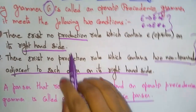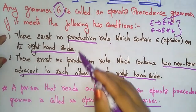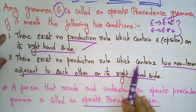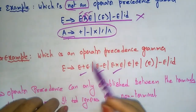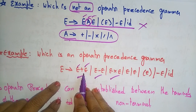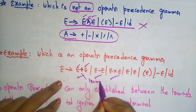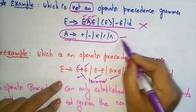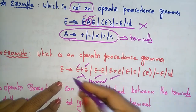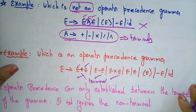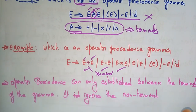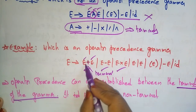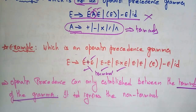So, condition one: there exists no production rule which contains epsilon on the right hand side. Condition two: no two non-terminals are adjacent to each other — between non-terminals there is always a terminal. Operator precedence can only be established between the terminals of the grammar; it ignores the non-terminals.